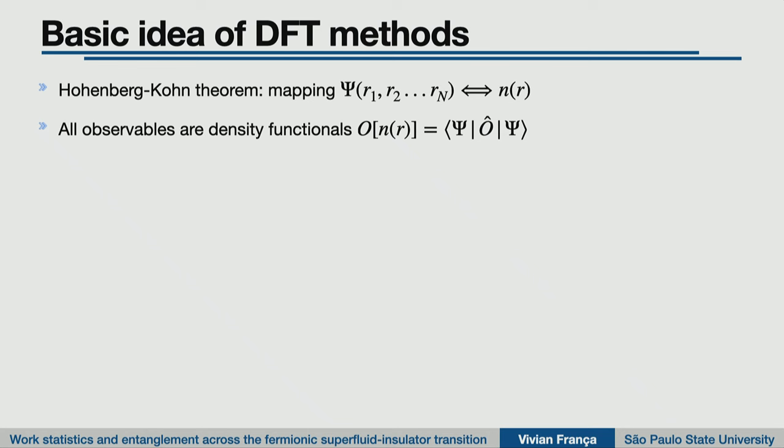Let me give a brief introduction on the basic ideas behind DFT calculations. With the Hohenberg-Kohn theorem, we know there is a unique relation between the wave function and the ground state density. As a consequence, any observable obtained via the wave function will be a functional of the ground state density. If I can replace any calculation done with the many-body wave function using instead the single-particle density, then of course I have a great simplification from the computational point of view.